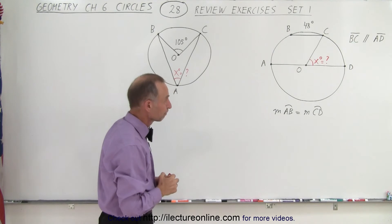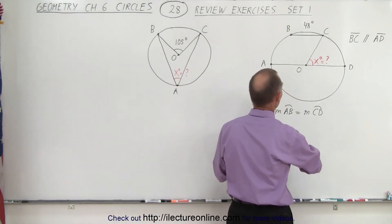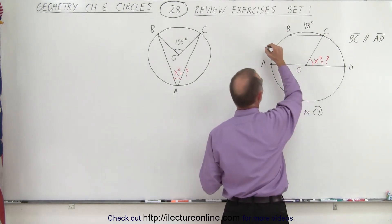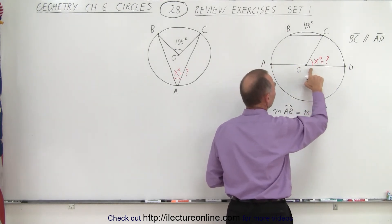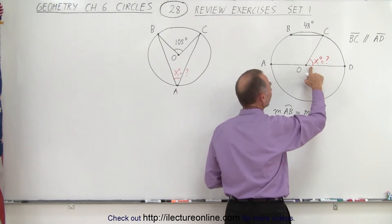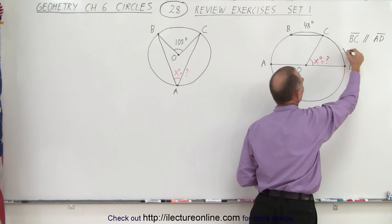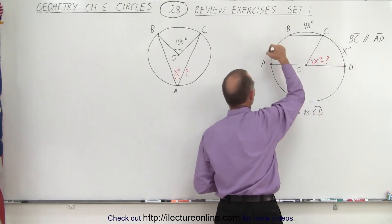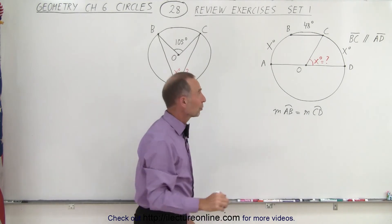And so therefore we can call this, let's see we already used the letter X, so let's call it Y. Actually no, because I know that the value for this angle here must equal the arc length here, so I can say that this must therefore be X degrees, and the other side this must then also be equal to X degrees.